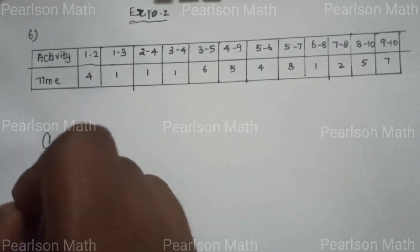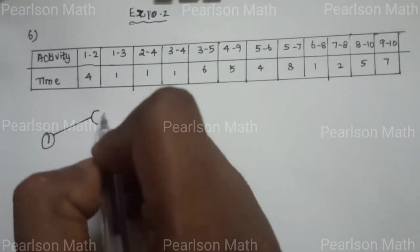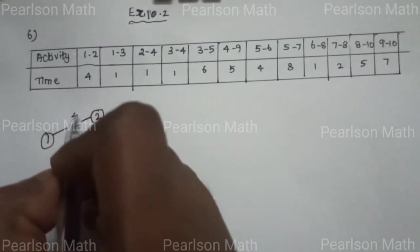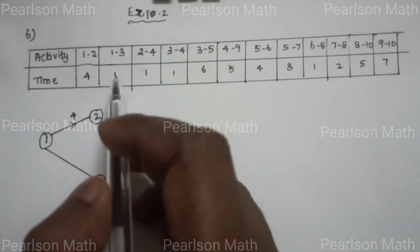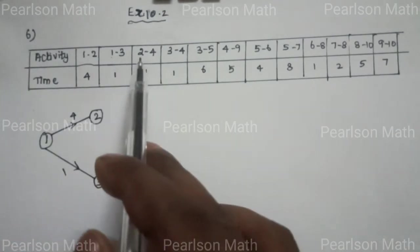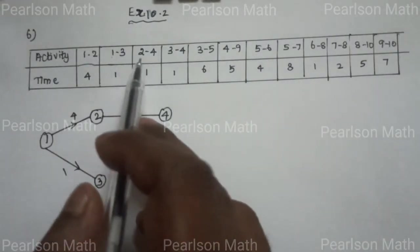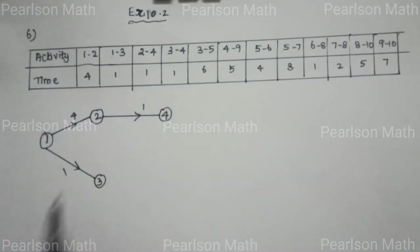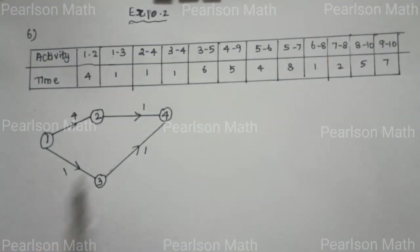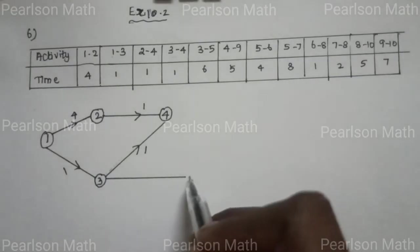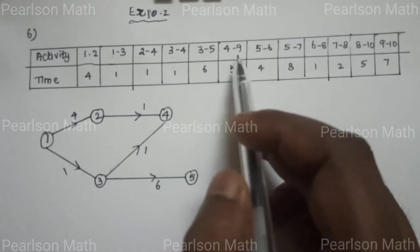From the data, activity 1 to 2 has duration 4, activity 1 to 3 has duration 1, activity 2 to 3 has duration 1, activity 2 to 4 has duration 1, activity 3 to 4 has duration 1, activity 3 to 5 has duration 5, activity 3 to 5 time is 6, and activity 4 to 9 has duration 9.